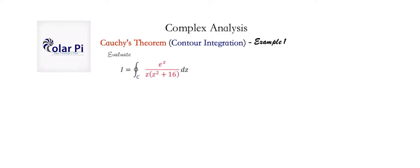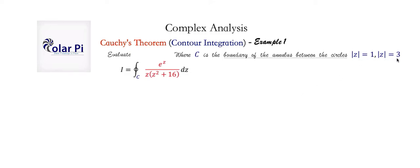So to that end, let's work on this. The contour C that we're talking about is going to be made of two circles, because the contour C is the boundary of the annulus between the circles given by the norm of Z equals 1 and the norm of Z equals 3. Now, notice that we want C to be a simple closed contour, but two circles do not make a simple closed contour. So to make a simple closed contour out of these two circles, what we're going to do is use the idea of the crosscut. I first introduced the idea of the crosscut in a video where I show you how to do the integral of 1 over Z.